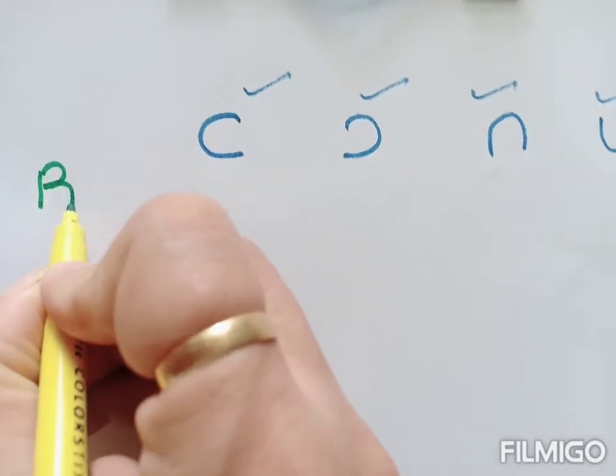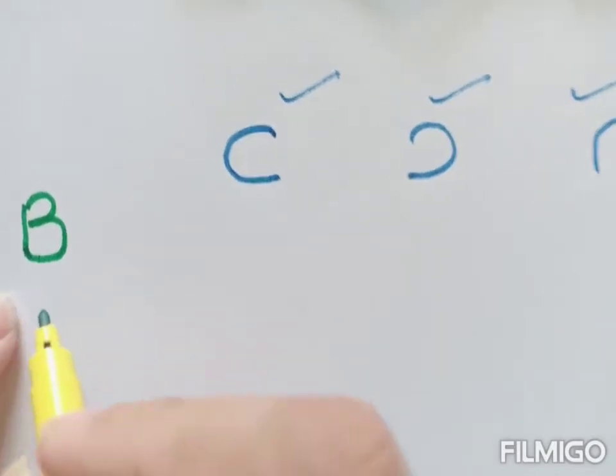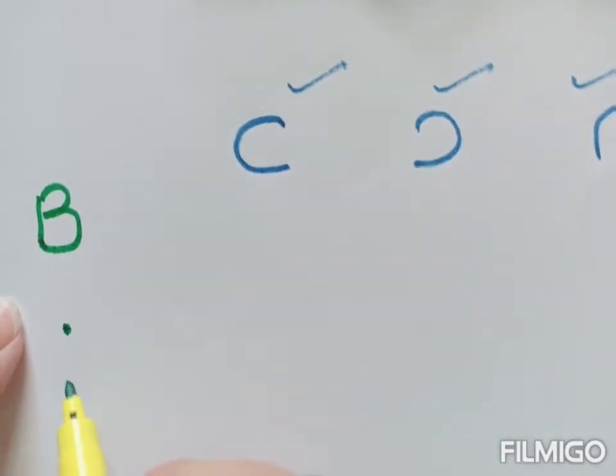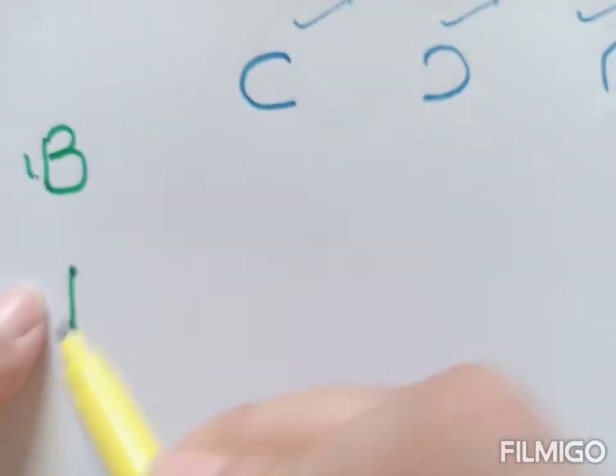we are going to teach to our toddler is going to be B. Look at this alphabet carefully. As you know, in the previous videos we have already done standing line. Okay, so this was first step of standing line.